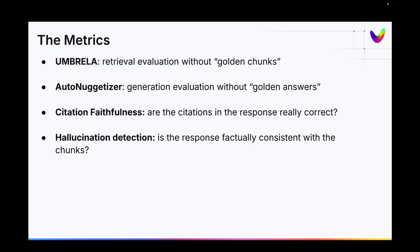The metrics are where it gets really interesting. How do we do this with no golden answers? There are a few metrics I want to mention that are part of this package. One is called Umbrella — it really allows you to do retrieval without the golden chunks. The other one is called AutoNuggetizer, which I'll talk more about for generation. We also have Citation Faithfulness, which measures whether citations in the response are really correct, and Hallucination Detection, which is based on Vectara's Hallucination Detection model.